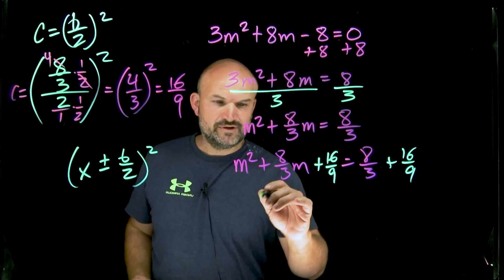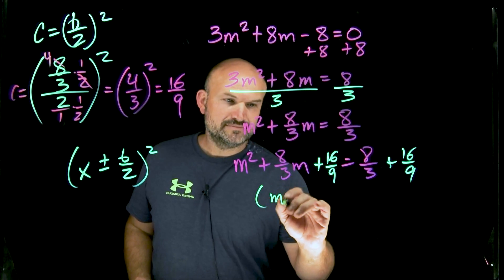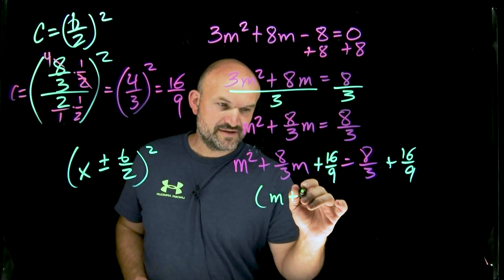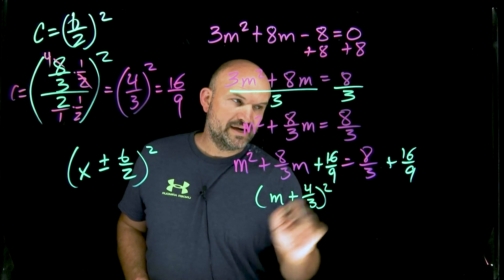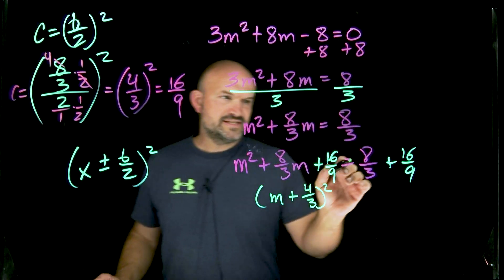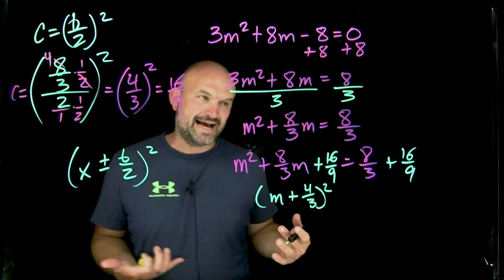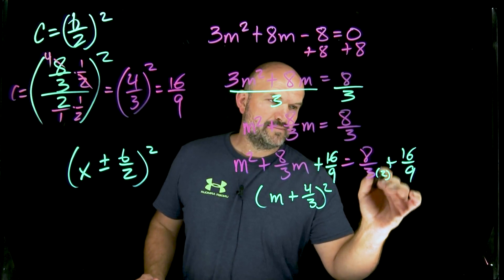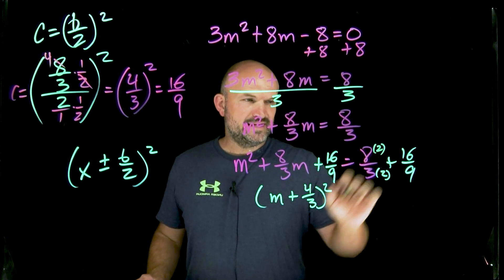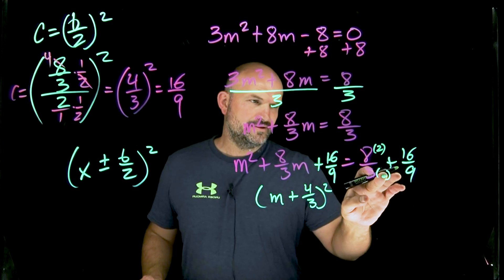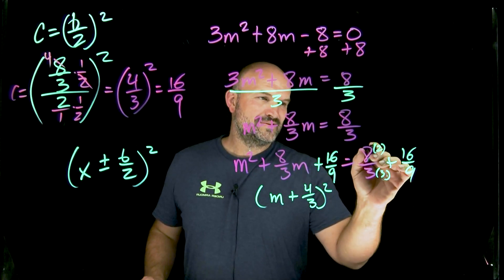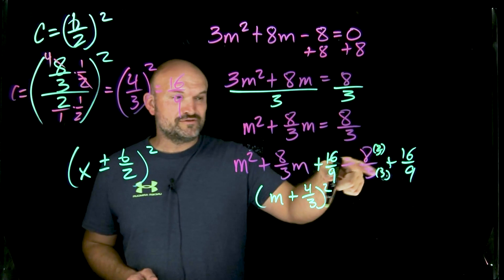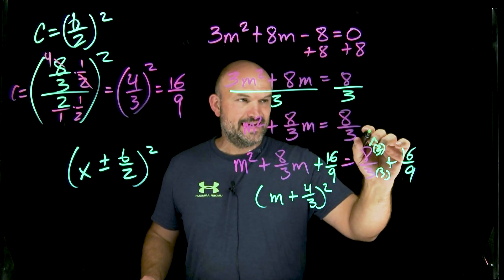So therefore, I can rewrite this as a M plus, because its middle term is positive, four-thirds quantity squared. And then over here, you can see that I don't have equivalent fractions, so I can't add them. However, I can simply just multiply by 3 over 3. So now therefore, that's going to be a 9. That's going to give me a 24.